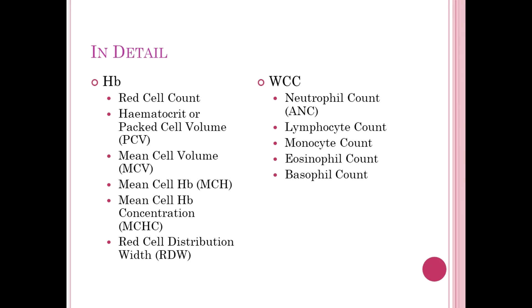Red cell distribution width is often changed in inflammatory states. Moving on to the white cell count: normal is about four to twelve. Above that, you're looking at inflammatory conditions, infections, or even some malignancies. Below that, you think about diseases suppressing bone marrow, medications suppressing bone marrow, or actual diseases of the bone marrow. The differential includes neutrophils (the main component), lymphocytes (B and T cells), monocytes, eosinophils, and basophils.